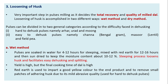Pulses can be divided into two general categories according to the difficulty faced in dehusking. First category — hard to dehusk pulses: arhar, urad, and moong. Second category — easy to dehusk pulses: channa (Bengal gram), masur (lentil), and field pea.